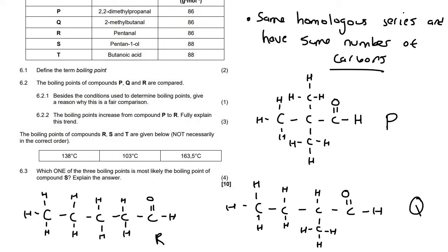So if you look at R, first of all, that one has no branches. This one has one branch. And this one has two branches. Can you guys remember how branches affect your boiling point? Let me explain it.